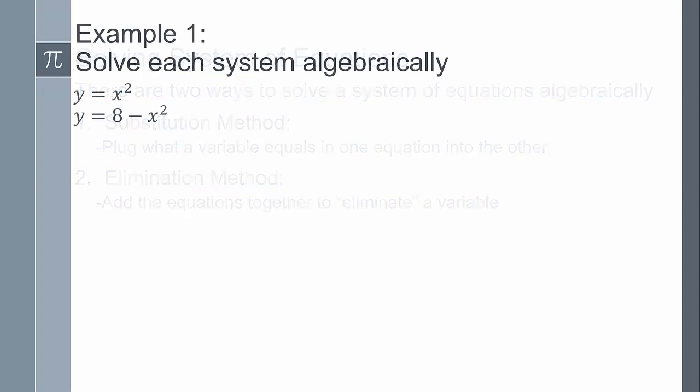Let's get to example number one: solve each system algebraically. I could technically graph this, and I'd get my solutions that way. Notice we have x and y, so the solution needs to include both x and y. Since these equations have both x and y and we consider them simultaneously, the answer is the point where they intersect — both the x and y values at that intersection.